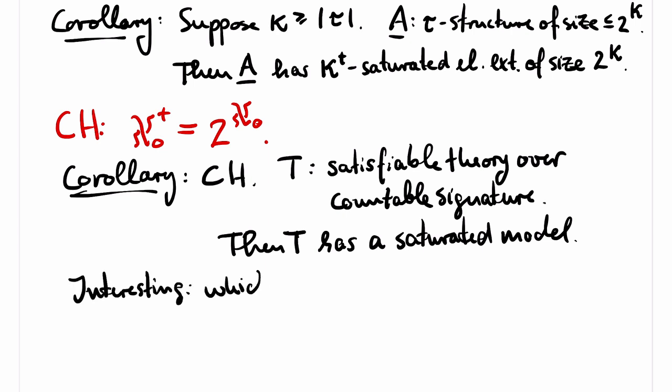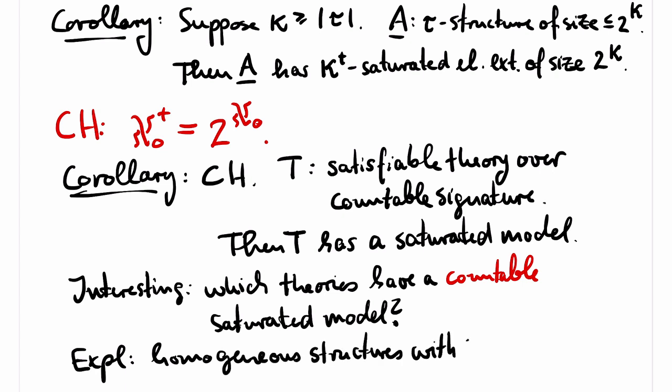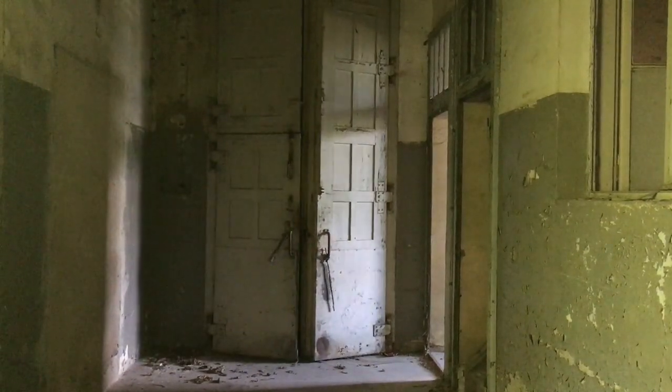An interesting model-theoretic question is which theories have a countable saturated model. Generalizing the argument we have seen for Q, the strict order of the rational numbers, one can show that every homogeneous structure with a countable signature is saturated. This provides many examples. This video was about structures realizing many types. The topic of the next video will be the opposite: we will construct models that omit certain types.